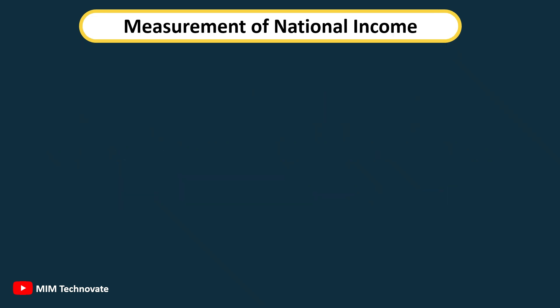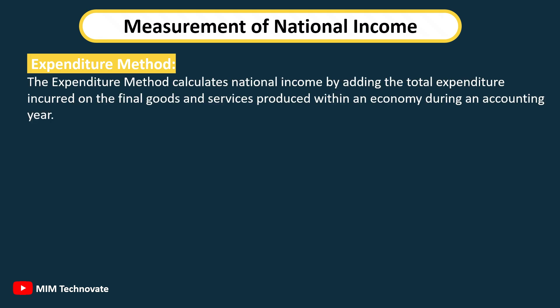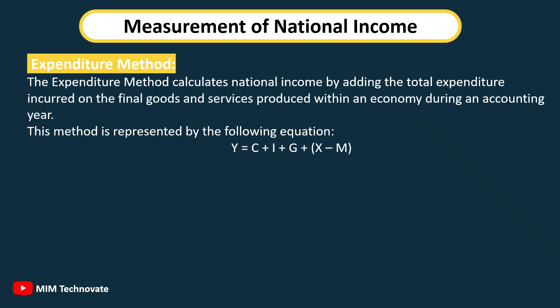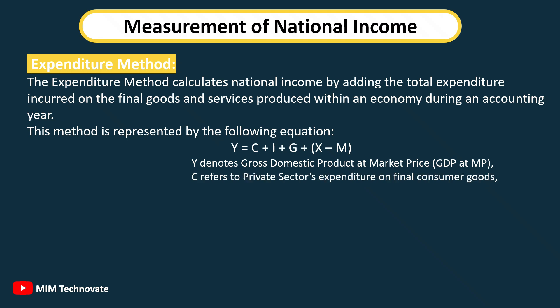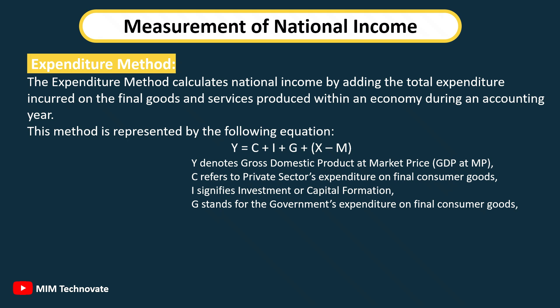Measurement of national income by the Expenditure Method calculates national income by adding the total expenditure incurred on final goods and services produced within an economy during an accounting year. This method is represented by: Y = C + I + G + (X − M), where Y denotes GDP at market price, C is private sector expenditure on final consumer goods, I signifies investment or capital formation, G is government expenditure on final consumer goods, X represents exports, M indicates imports, and (X − M) reflects net exports.